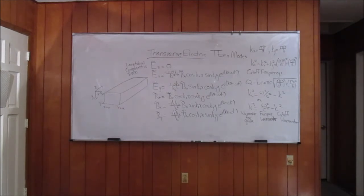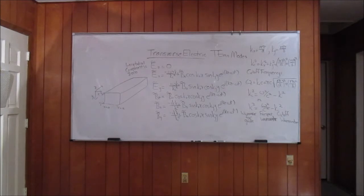Boundary conditions are that the tangential component of the electric field vanishes at the surface of the waveguide, and the normal component of the magnetic field vanishes at the surface of the waveguide.